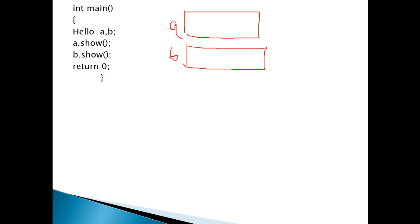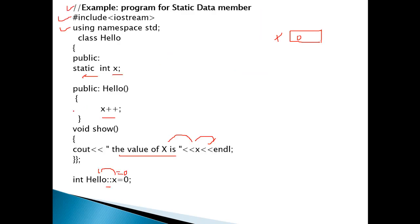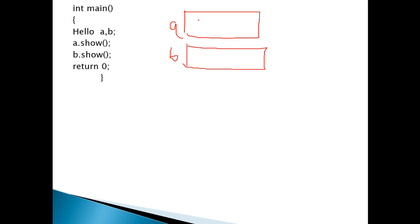Inside objects a and b, we have: x which is static, a constructor hello, and a function called show. So the a object has a hello constructor and a show function. The same case applies with object b — it also has a hello constructor and a show function.